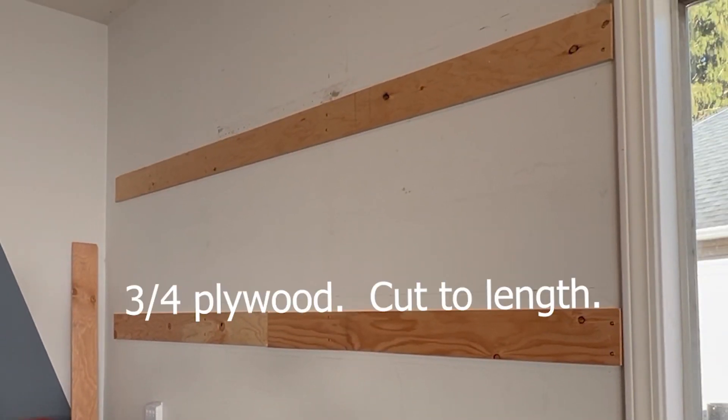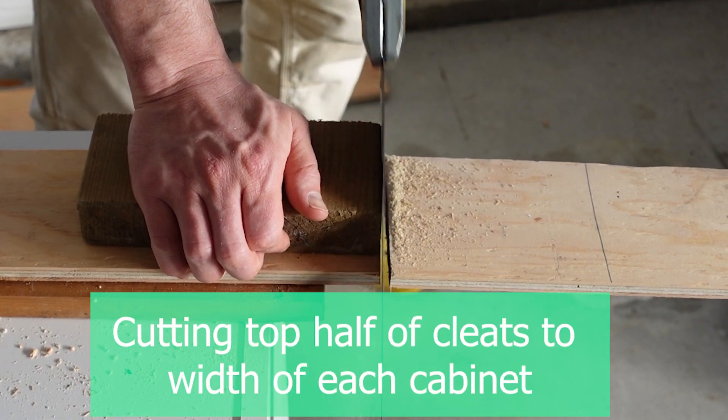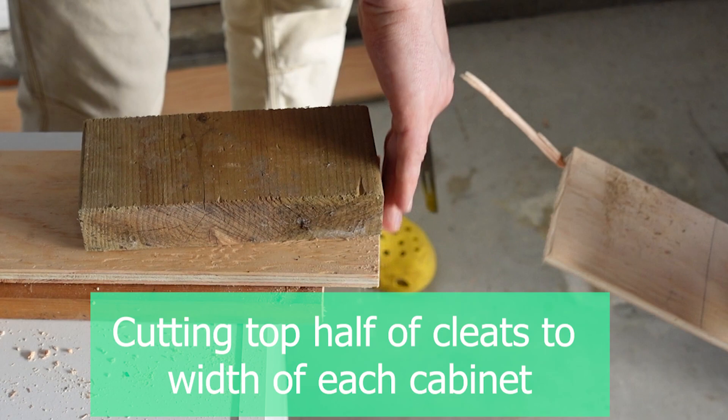The plywood on the bottom is just three quarter inch cut to length, mainly there to provide support. We're now ready to cut the cabinet portion of the French cleat, which is the top half.